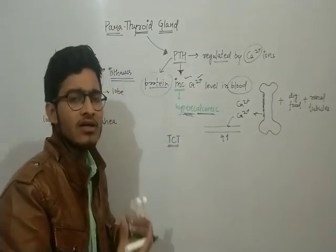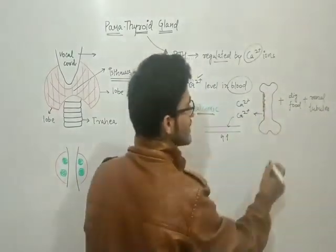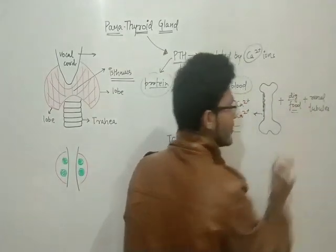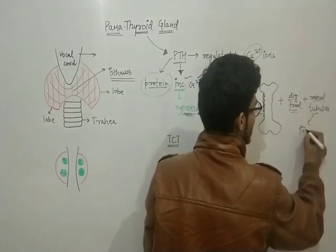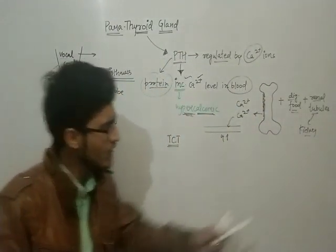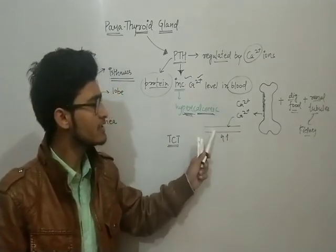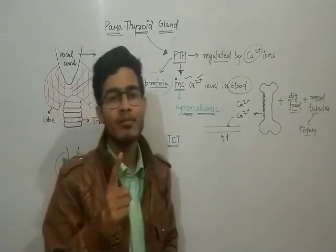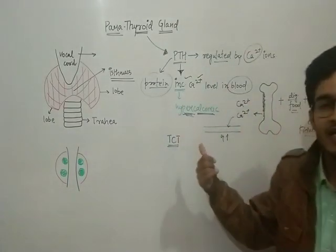Hypercalcemic. How it will increase the calcium in blood? Bone demineralization, calcium from the digested food as I have already told you, and from renal tubules that is from the kidney. So all these three sources will pour calcium into the bloodstream so that the overall concentration of calcium in blood will increase. That is the function of parathyroid hormone.